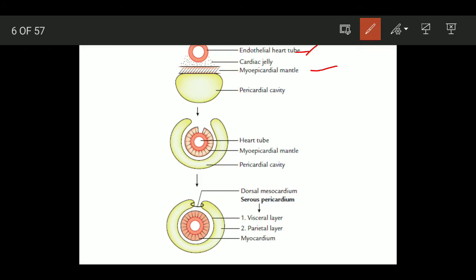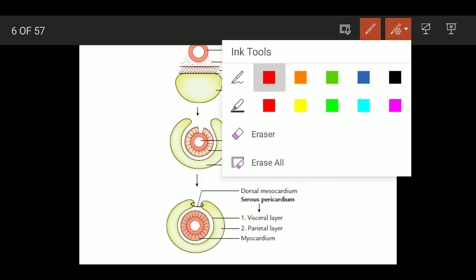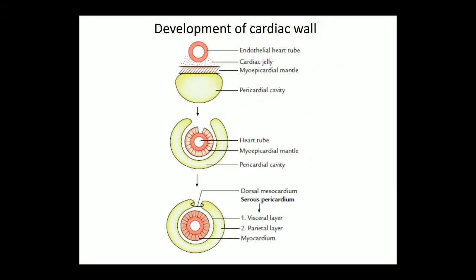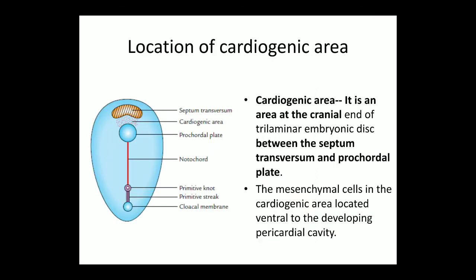The intraembryonic coelom will form the pericardial cavity. Now the cardiogenic area — it is formed by the splanchnopleuric mesoderm and it is present at the cranial end of the embryo.